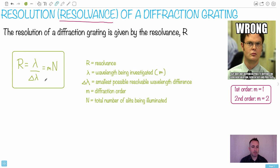Here, lambda (λ) is the wavelength being investigated, so that would be in meters. Then we've got delta lambda (Δλ), which is the smallest possible resolvable wavelength difference. In fact, this is often the key thing you want to find here - this is the difference in wavelengths that you could actually tell apart.